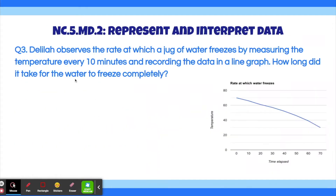Question 3. Delilah observes the rate at which a jug of water freezes by measuring the temperature every 10 minutes and recording the data in a line graph. How long did it take for the water to freeze completely? Here is the graph that she recorded the temperature and time at.